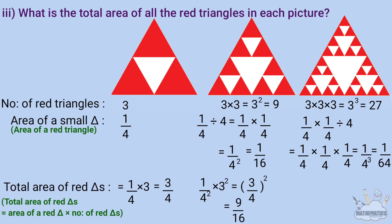In picture 3: the area of one red triangle is (1/4)³, the number of red triangles is 3³. So the total area is (1/4)³ × 3³ = (3/4)³ = 27/64.